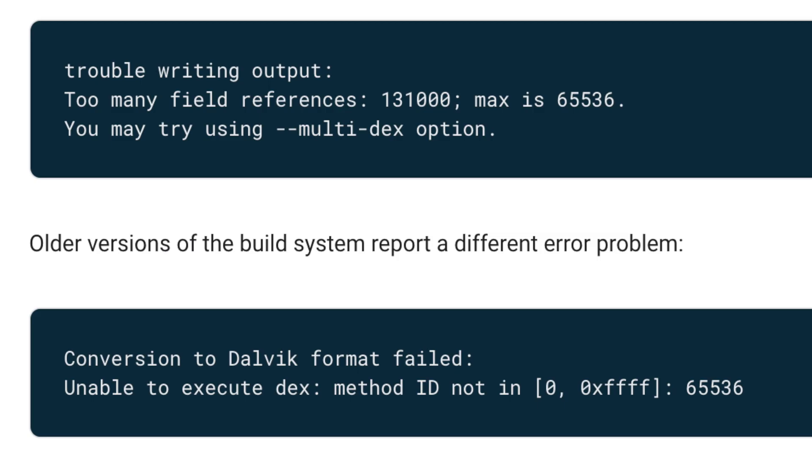If your app has more than one DEX file, we call it multidex — and that is what we are learning today. The next question is: how can we enable multidex in our application? If your minimum SDK is 21 or higher, you don't have to do anything — it will be enabled by default. But if your minimum SDK is less than 21, you will have to follow some steps to enable multidex by referring to the Android official documentation. If multidex needs to be enabled and you haven't enabled it, you will see errors indicating that the 64K method limit has been reached.